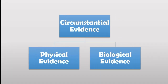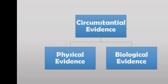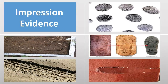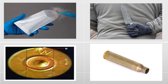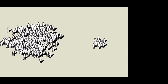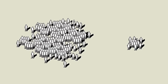Circumstantial evidence can be either physical or biological in nature. Physical evidence includes impressions such as fingerprints, footprints, shoe prints, tire impressions, and tool marks. Physical evidence also includes fibers, weapons, bullets, and shell casings. With the exception of fingerprints, physical evidence reduces the number of suspects to a specific smaller group of individuals.